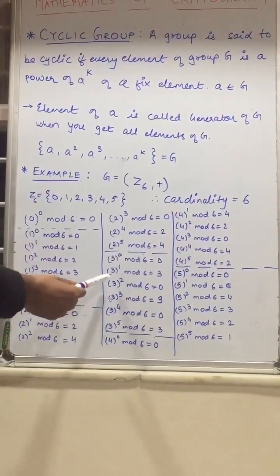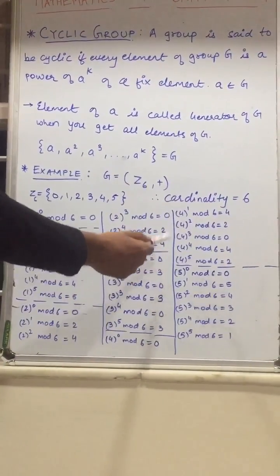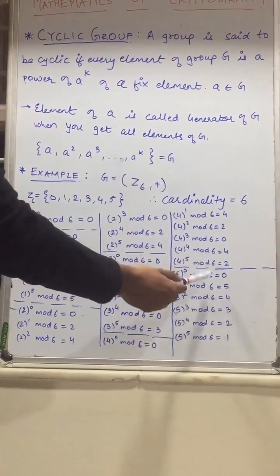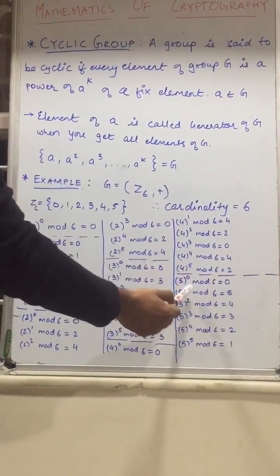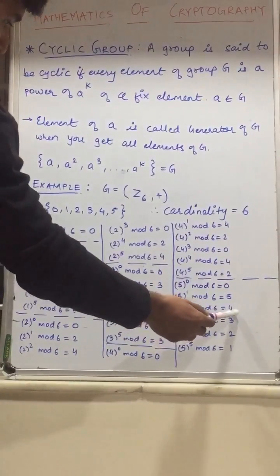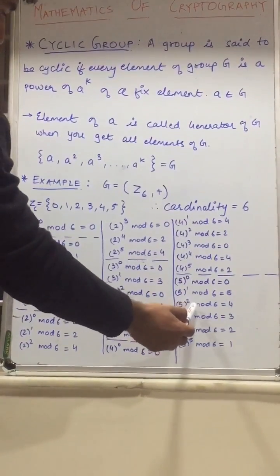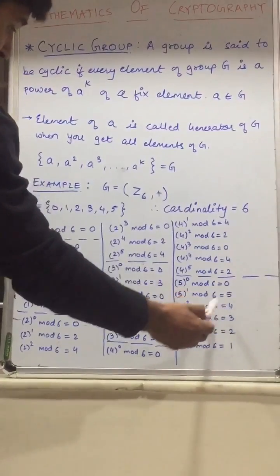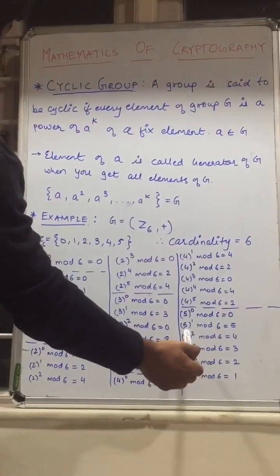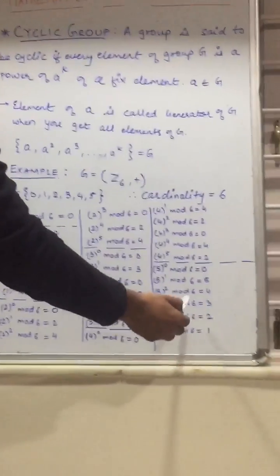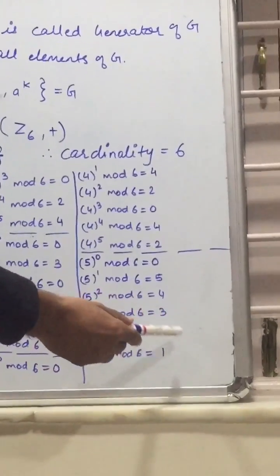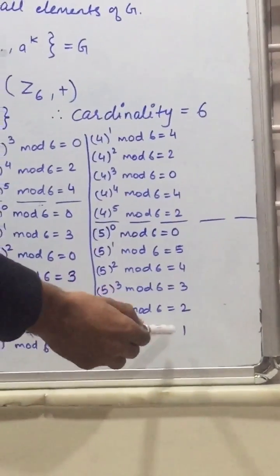Now calculate all the elements from 3 and 4, and let's move to 5. 5 raised to 0 mod 6 is equal to 0. 5 raised to 1 mod 6 is equal to 5. 5 raised to 2 mod 6 is equal to 4, because 5 plus 5 is equal to 10 and 10 mod 6 is equal to 4. 5 raised to 3: we add 5 three times, so it is 15, and 15 mod 6 is equal to 3. 5 raised to 4 mod 6 is equal to 2, and 5 raised to 5 mod 6 is equal to 1.